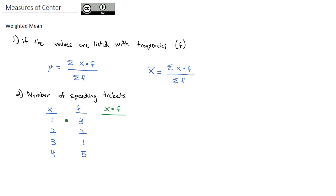We're going to multiply x times the frequency, so 1 times 3 is 3, 2 times 2 is 4, 3 times 1 is 3, and 4 times 5 is 20.